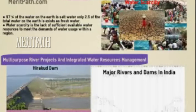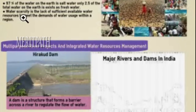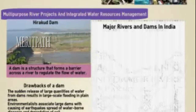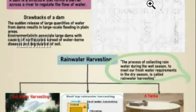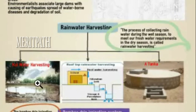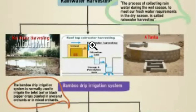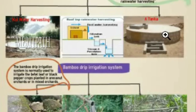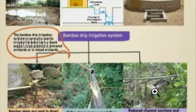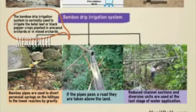To quickly review the chapter on water resources: 97% of water on Earth is salt water and only 2.5% is fresh water. Topics covered include water scarcity, multi-purpose river projects and integrated water resources management, the Hirakud dam, rainwater harvesting methods such as kul water harvesting in Jammu, rooftop rainwater harvesting, tankas in Rajasthan, and the bamboo drip irrigation method in Meghalaya. These systems work together to provide water for irrigation and domestic use.